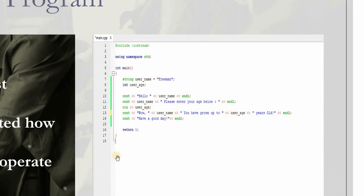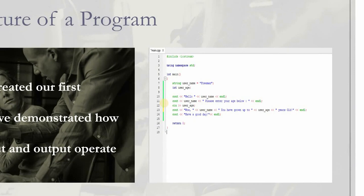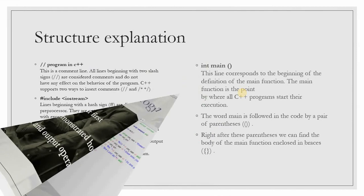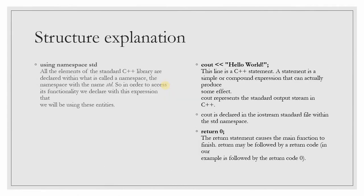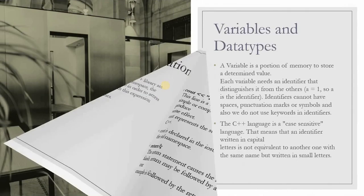If I create any other function here, in order for me to run that function it has to be called inside the main function — just like what we did when we defined those constant variables: we defined them outside and used them inside. This is the structure of a C++ program. If you do not understand anything, just send me a direct text message so I can assist. Also, cout is used for output and cin is used to take input.